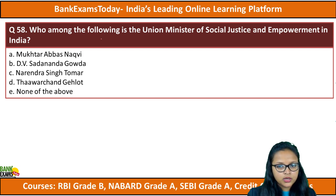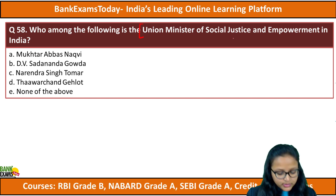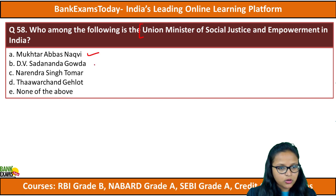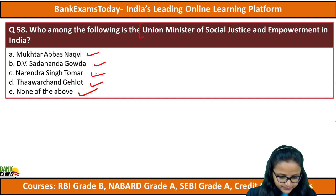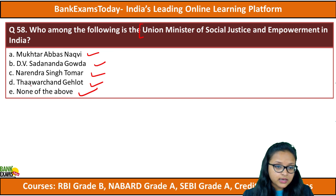Moving to question number 58: who among the following is our Union Minister for Social Justice and Empowerment in India? The options are Mukhtar Abbas Naqvi, Nagvi, D.V. Sadananda Gowda, Narendra Singh Tomar, Thawarchand Gehlot, and none of the above. The answer is D — Thawarchand Gehlot.